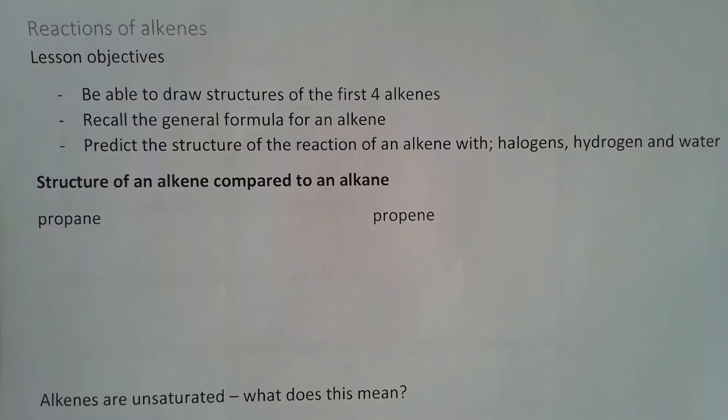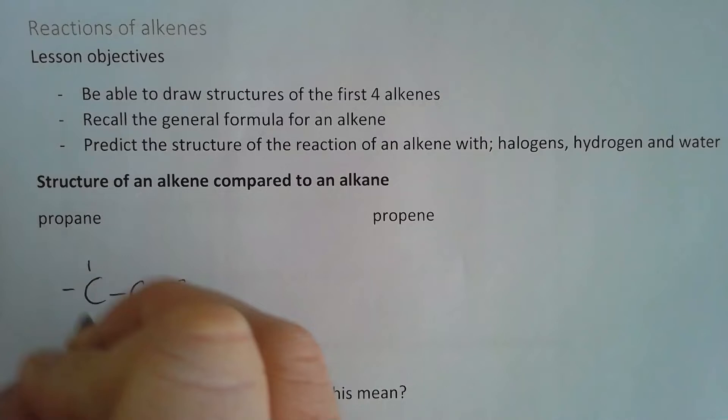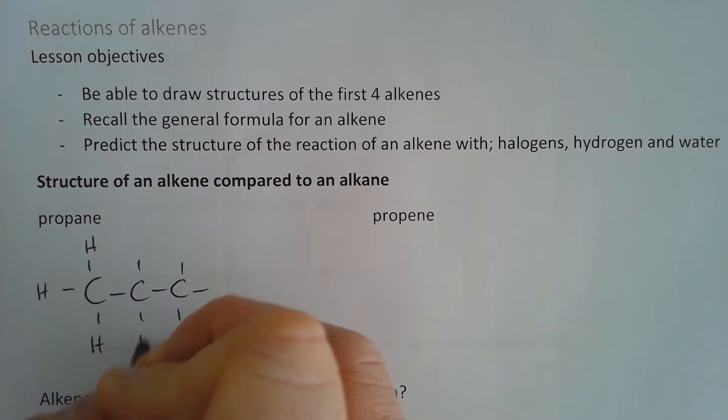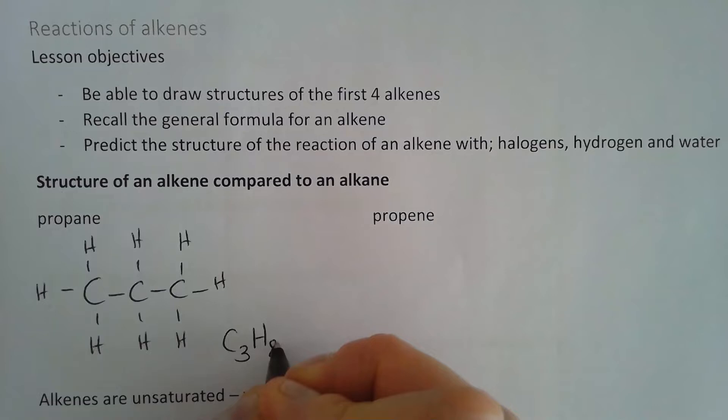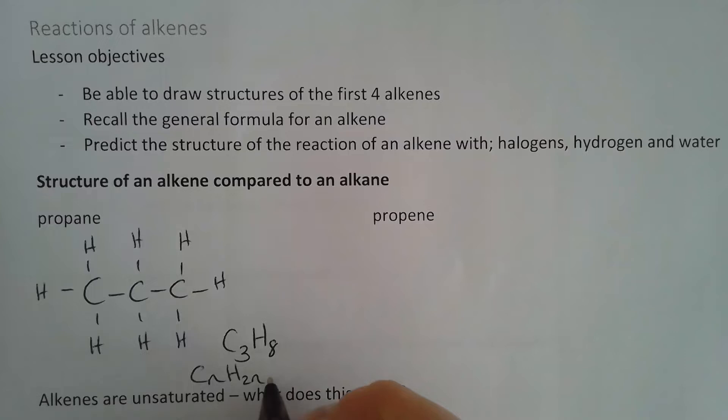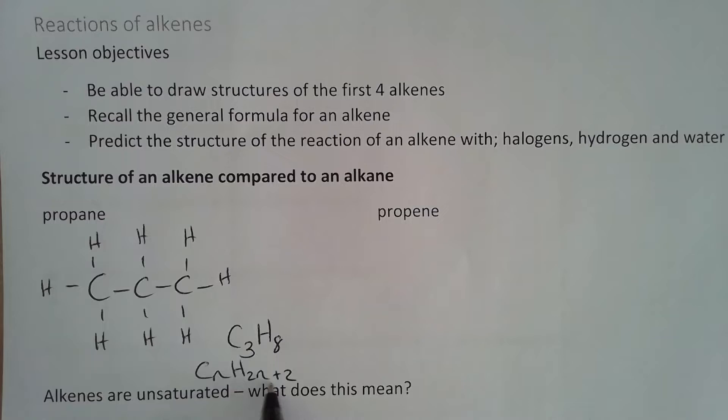The first thing we need to be able to do is recognize the structural difference between an alkene and an alkane. We've seen the structure of alkenes. This is an example of propane. Propane has the formula C₃H₈. The general formula of an alkane is CₙH₂ₙ₊₂ — so for every carbon atom, we have twice as many hydrogen atoms plus another two. If we have three carbon atoms, that's 3×2=6, plus 2, which is 8.